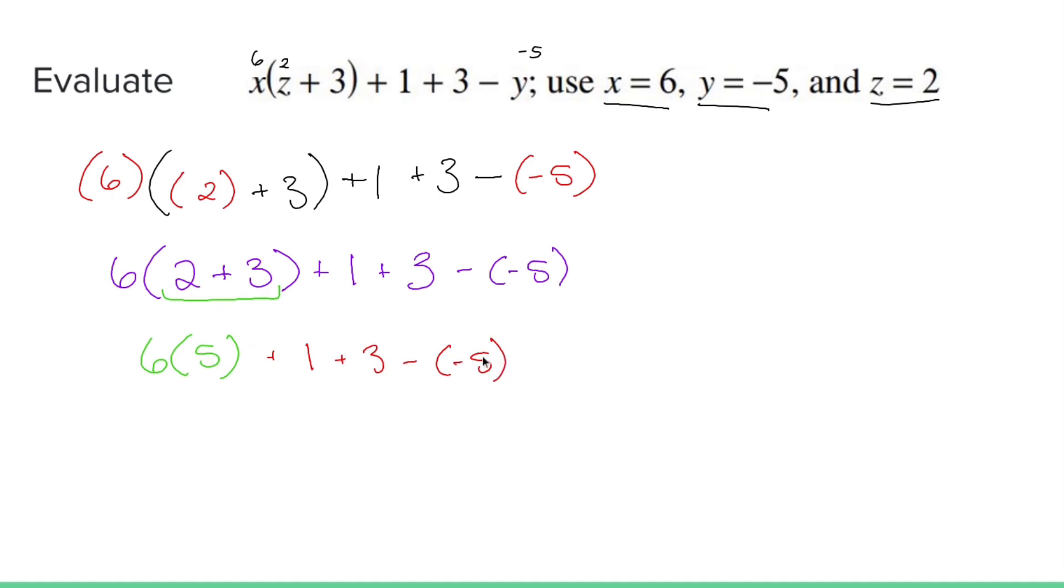Then you deal with exponents. I don't have any exponents. Then you deal with multiplying, dividing left to right. So this is a multiplication problem. You get 30. So 30 plus 1, plus 3. And you know what? A double negative is technically a multiplication problem, so plus 5.